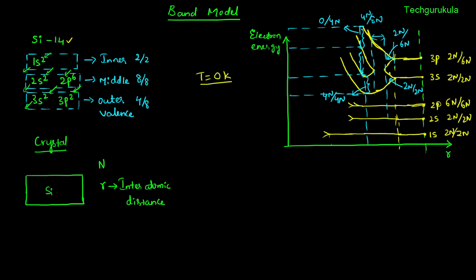Projecting onto the y-axis to get the band structure: this upper range of energy levels is called the conduction band, and this lower range is called the valence band. The difference between these two bands is an energy range over which there are no energy levels at all — we call this the energy band gap, denoted Eg. It is also called the forbidden energy gap because electrons are forbidden from entering this region as there are no energy levels available.